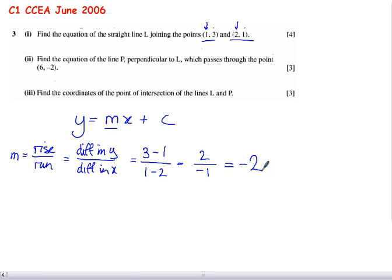So we found the gradient. And so we can update our equation of the straight line: y equals minus 2x plus c. So our next challenge is to find the value of c. And the way that we can do that is by picking one of our coordinates. It doesn't matter which one. I'm just going to go for the first one.